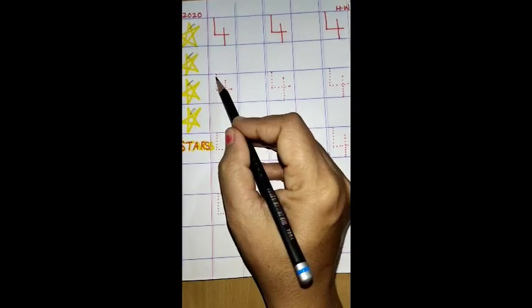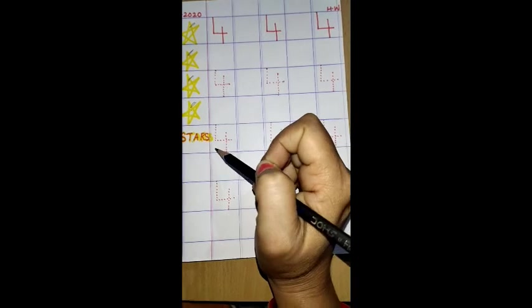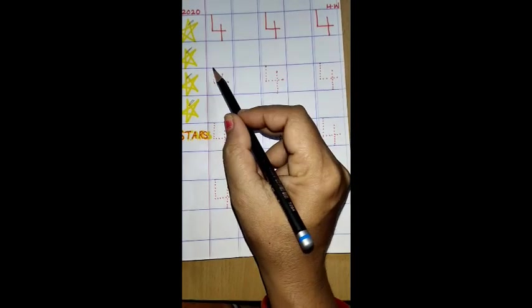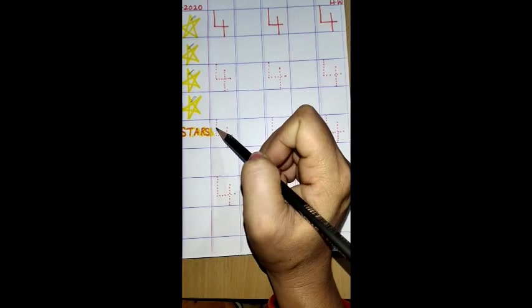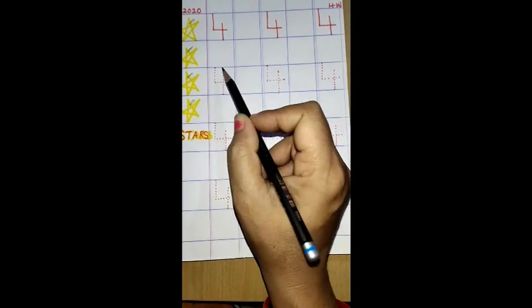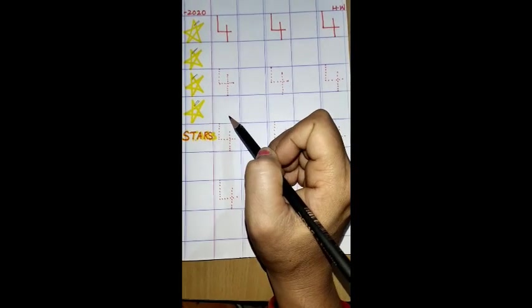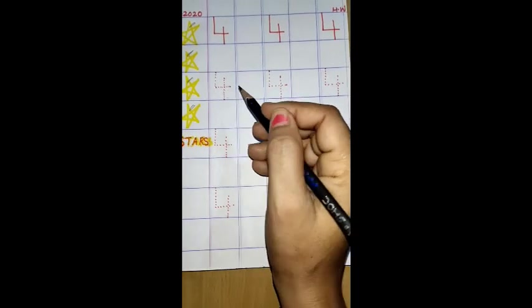Now, ma'am has a whole tracing dot. Dear parents, please give them four for a few days. Because four is a little difficult. So if you will give them this way, they will easily understand and they will write them.